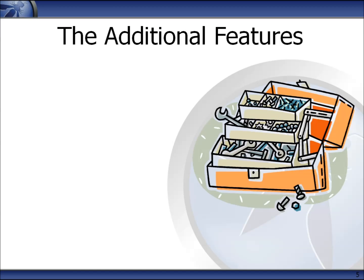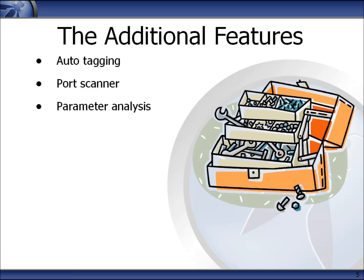ZAP also provides a wide range of other features. The auto-tagging feature tags messages in ZAP so you can easily see, for example, which pages have hidden fields. You can change these tags to flag anything of interest to you. ZAP includes a port scanner so you can see which ports are open on the machine. It analyses all of the requests and shows you a summary of all the parameters that an application uses. It has very good smart card support, which is very useful if the application you are testing uses smart cards or tokens for authentication.